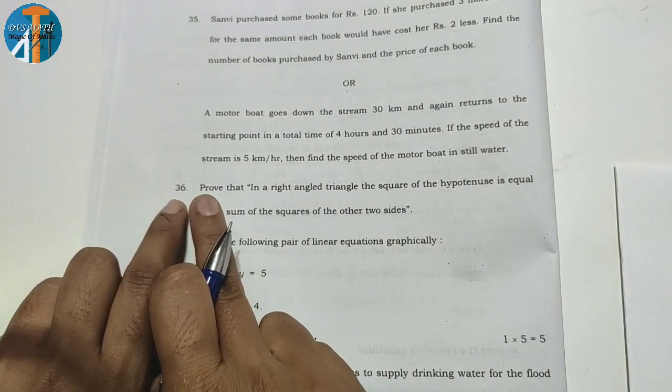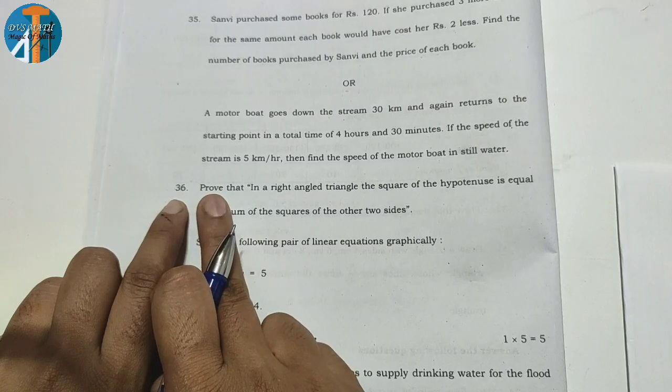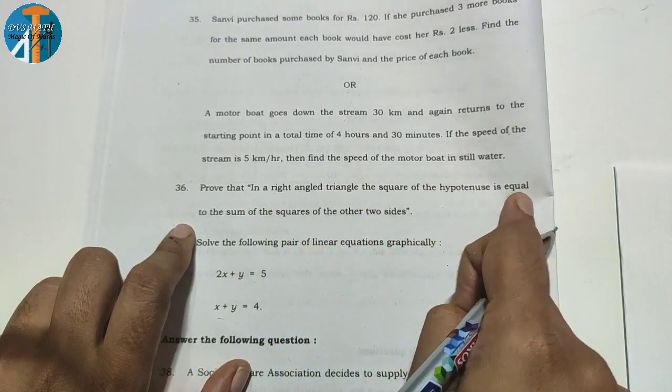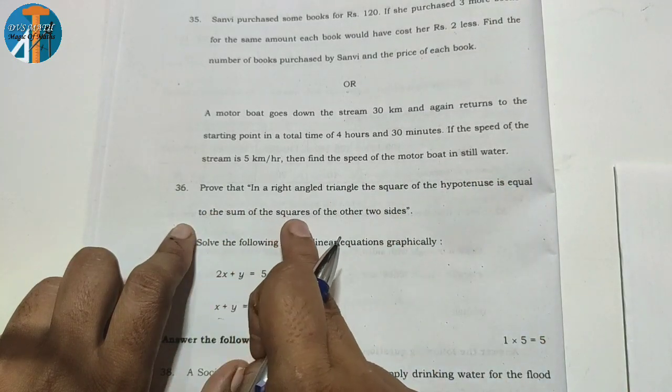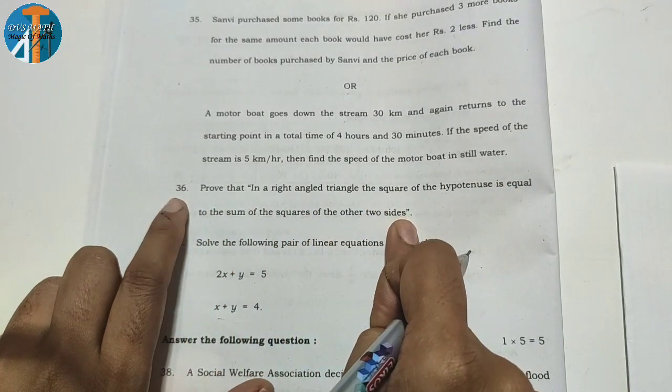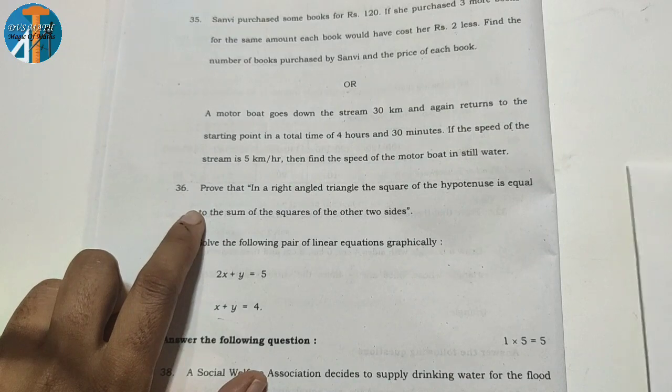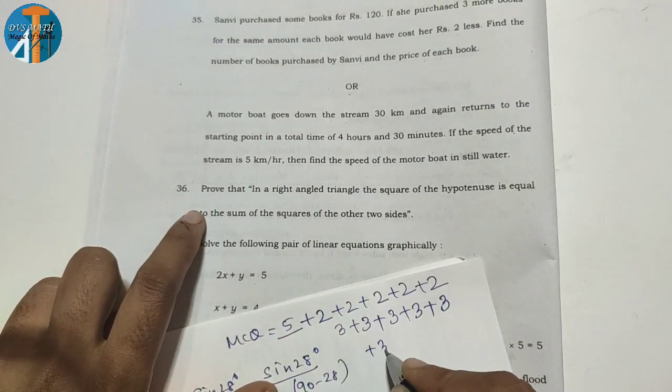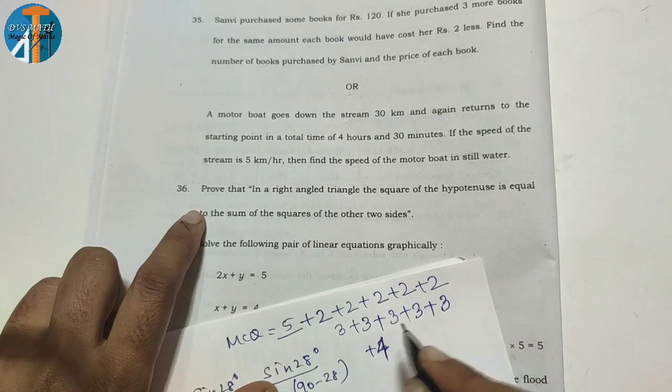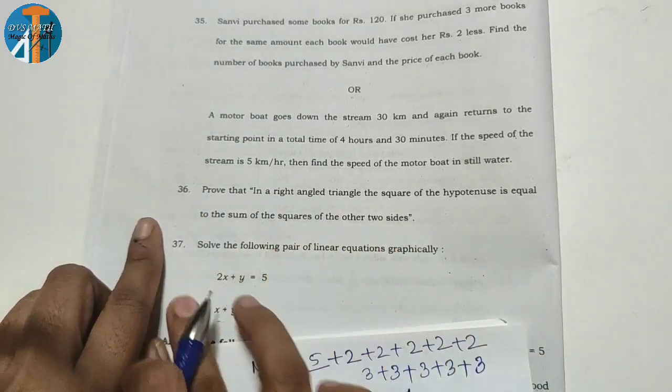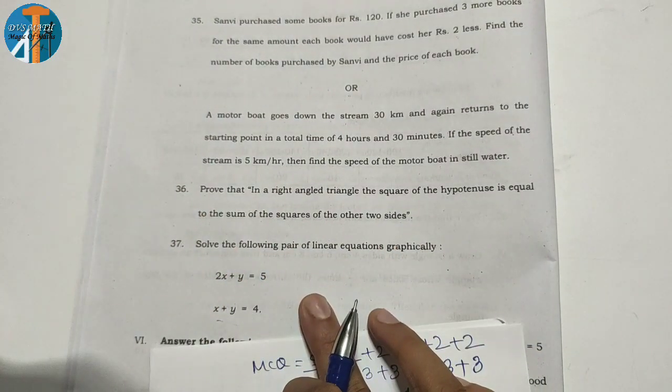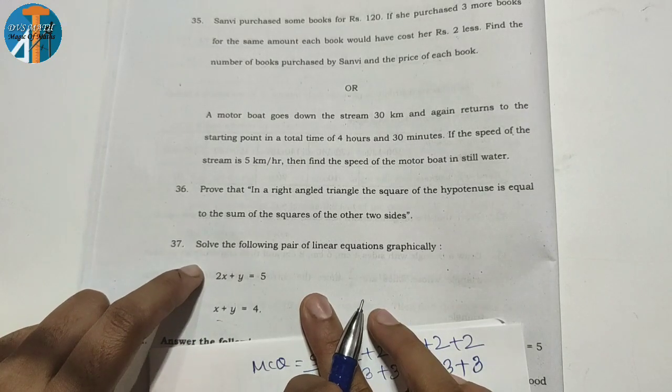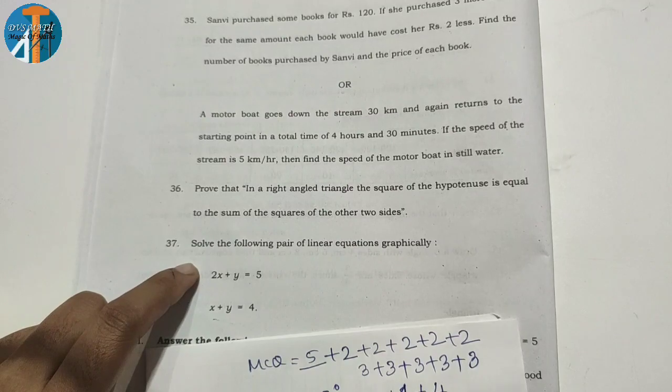Four marks question number 36 is Pythagoras theorem: In a right-angled triangle, the square of the hypotenuse is equal to the sum of the squares of the other two sides. I will tell you this in the theorem section - 4 marks. Next, solve graphically - linear graph, easy to solve. This gives 4 marks. Total marks covered so far.